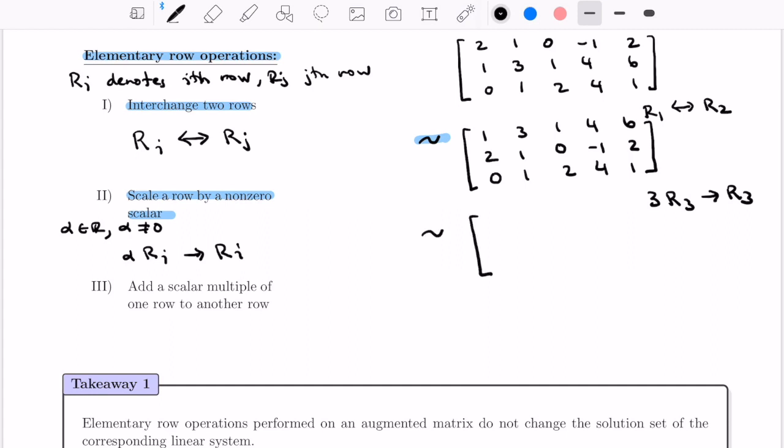When I do that, nothing changes at all for the first two rows of the matrix. So I have 1, 3, 1, 4, 6; 2, 1, 0, minus 1, 2. Now I have to scale every single entry in the third row by 3. This gives me 0 times 3, which is 0; 1 times 3 is 3; 3 times 2 is 6; 3 times 4 is 12; and 3 times 1 is 3. Notice again I still put a tilde because I've done another elementary row operation. Anytime you do an elementary row operation, you have to indicate that in your work.